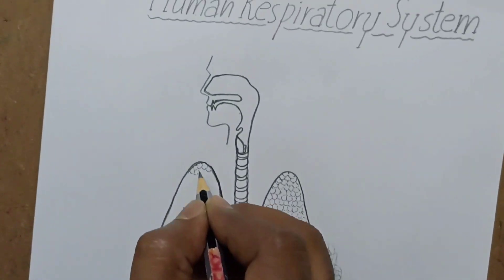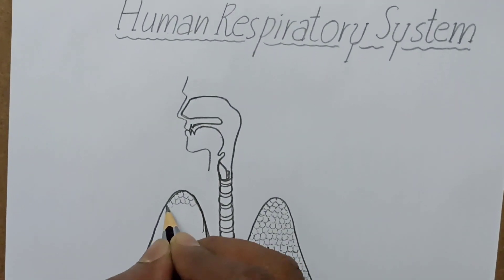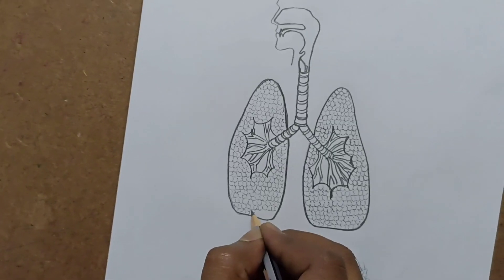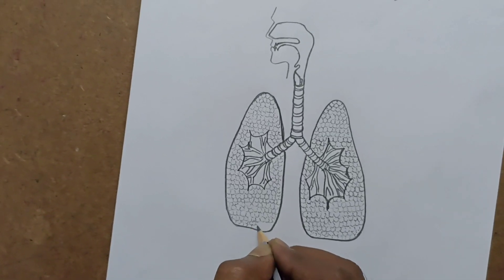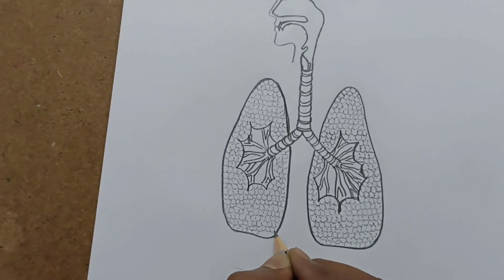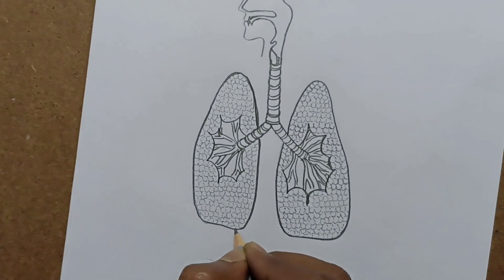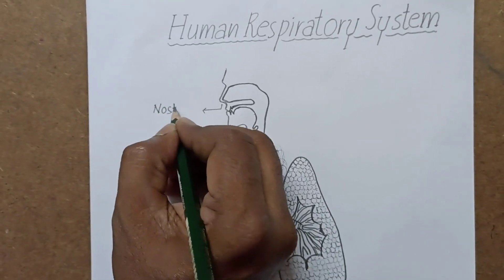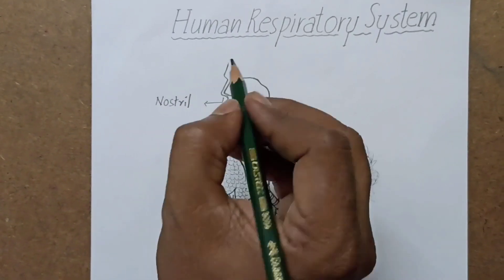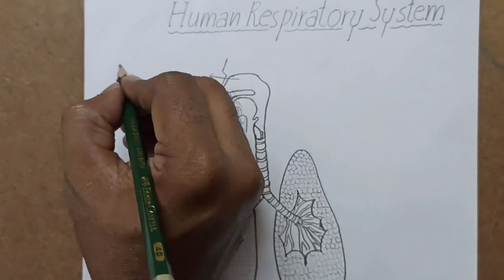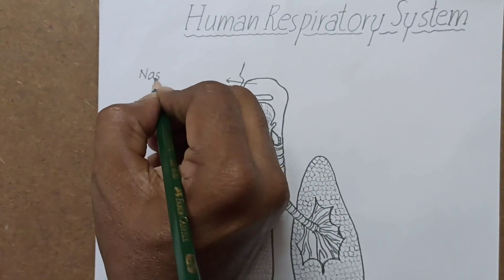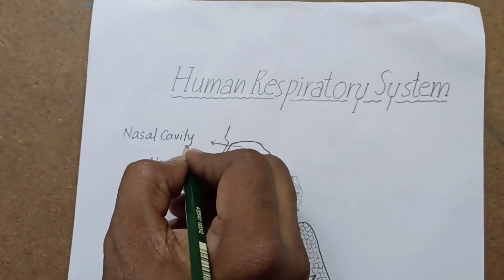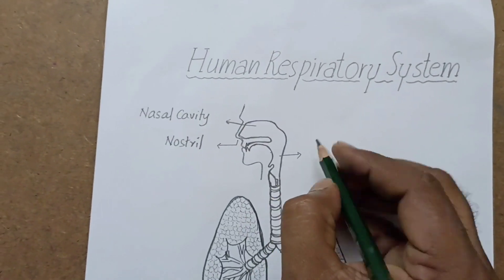We have to draw alveoli in the second lung also. This is the internal structure of the human respiratory system. Now for labeling: this is the nostril, this is the nasal cavity.